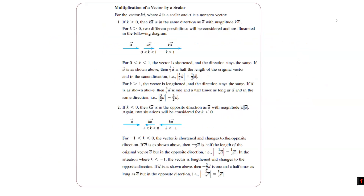Here's the summary: if we multiply by a positive number, direction won't change. If we multiply by a scalar between 0 and 1, the length decreases. If we multiply by a negative scalar, direction changes to the opposite. If k is between negative 1 and 0, direction changes and the vector gets shorter. When k is greater than 1 in absolute value, the magnitude increases.